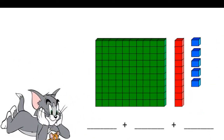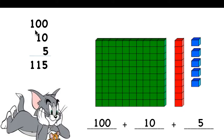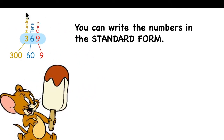One last time. How many hundreds do you have? One hundred. How many tens? One ten — that will be ten. How many ones? Five. What will be the standard form? Copy from one hundred the first digit 1, from ten copy 1, and from five copy 5. The standard form of the number is one hundred fifteen.